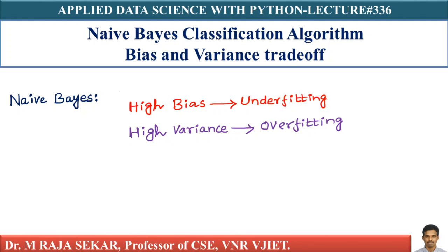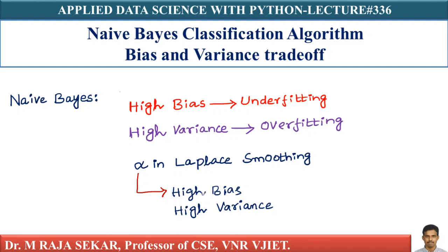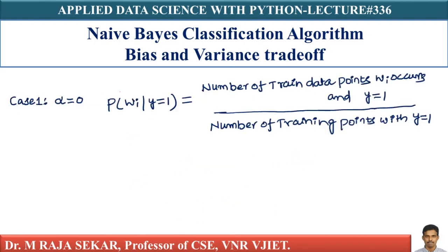For Naive Bayes, there is only one parameter, which is alpha in Laplace smoothing. This alpha determines overfit or underfit. As alpha changes, you either have high bias or high variance. Let's take case 1: alpha equal to 0. What happens to your conditional probabilities — the likelihood for any given word Wi — probability of Wi given Y equal to 1 is equal to the number of training data points where Wi occurs and Y equal to 1, divided by the number of training points with Y equal to 1.